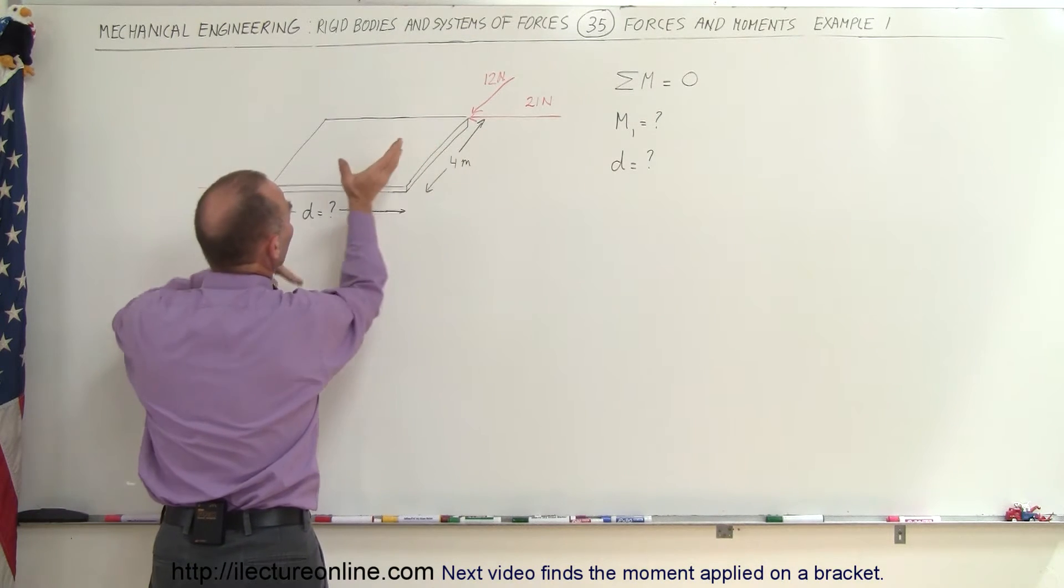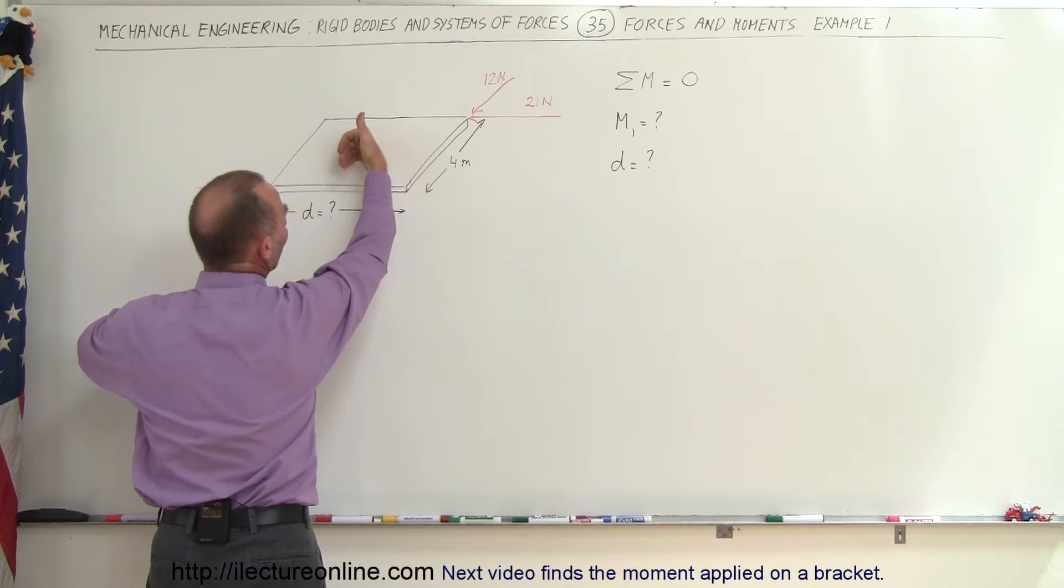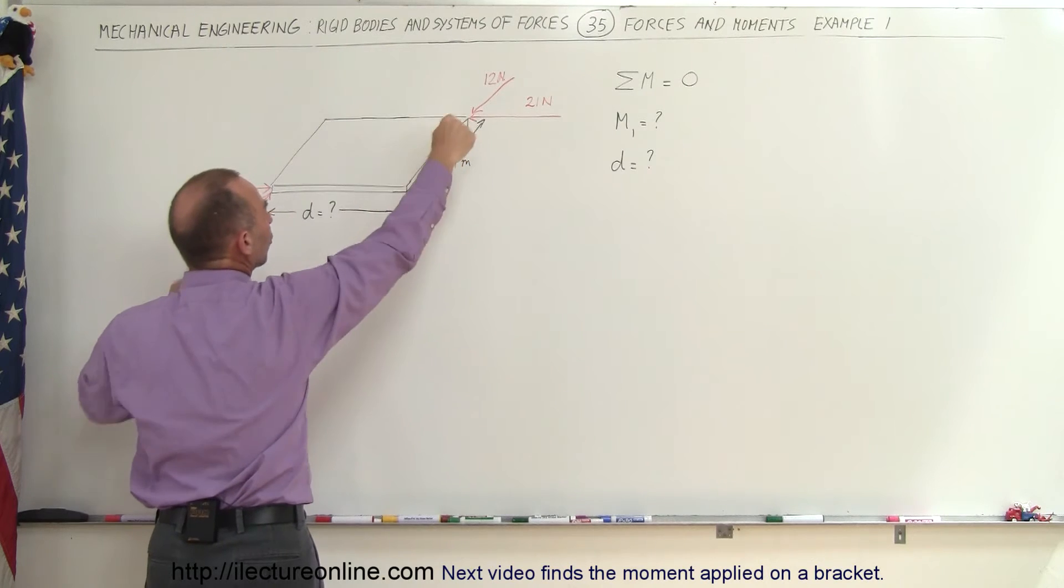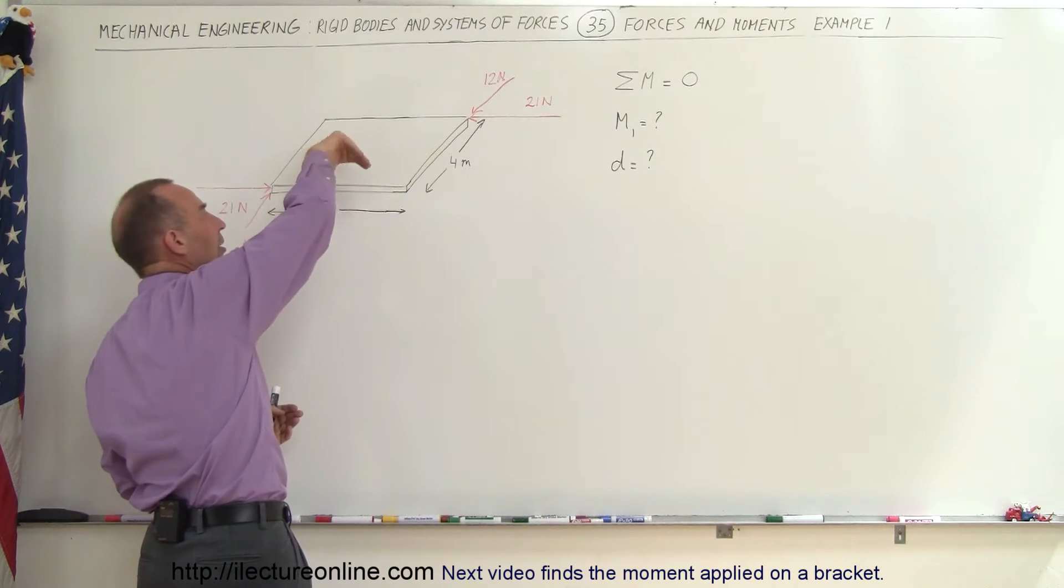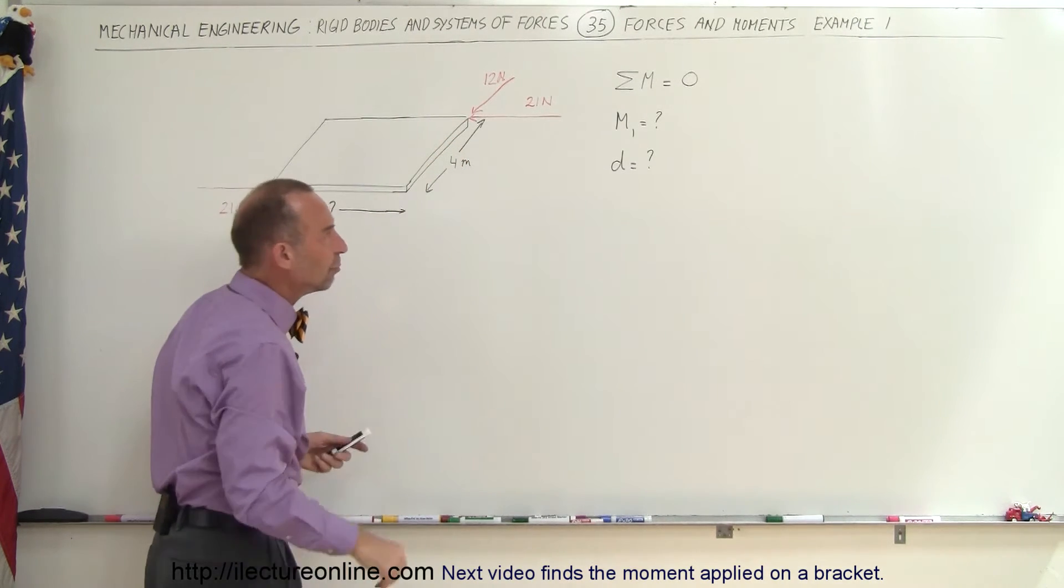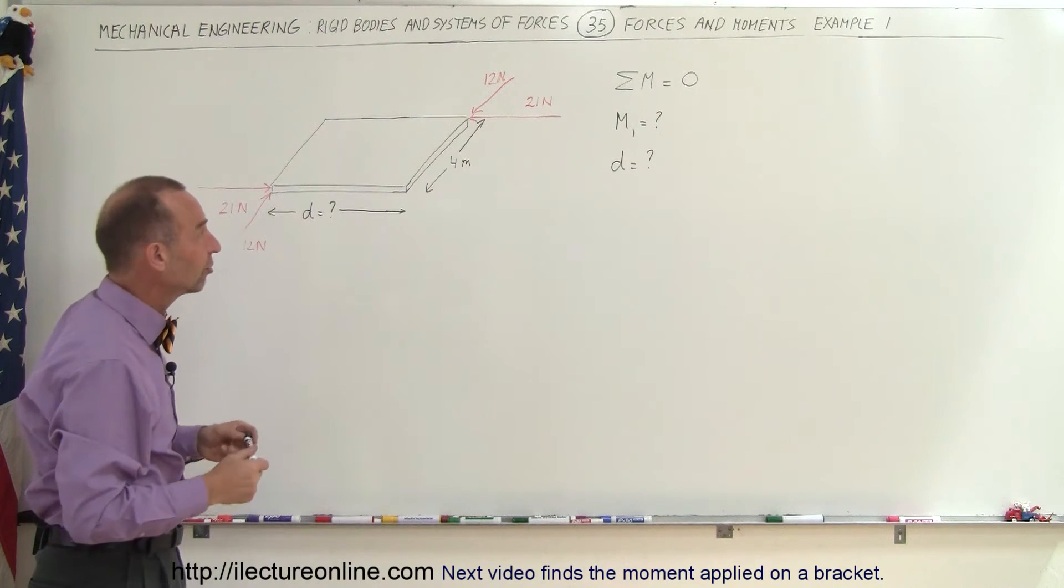The 21 Newton forces cause a counterclockwise direction, that's a positive moment. The 12 Newton forces cause a clockwise direction, which is a negative moment. So when you add them together, we should get zero.